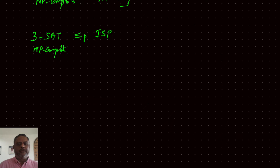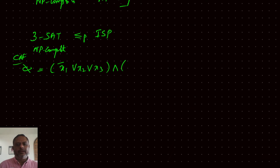We know the 3SAT problem is NP-complete. If the 3SAT problem can be reduced to the independent set problem in polynomial time, then the independent set problem can confidently be claimed as NP-complete. Let's take an example. The 3SAT problem is a CNF problem — conjunctive normal form — with 3 literals in every clause: (X1-bar ∨ X2 ∨ X3), (X1 ∨ X2 ∨ X3-bar), and (X1-bar ∨ X2-bar ∨ X3-bar).